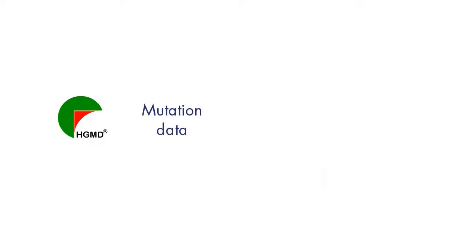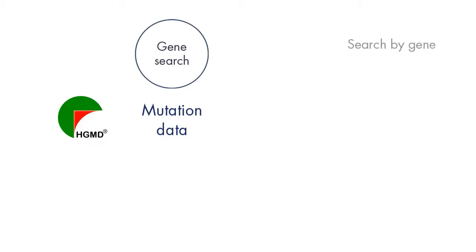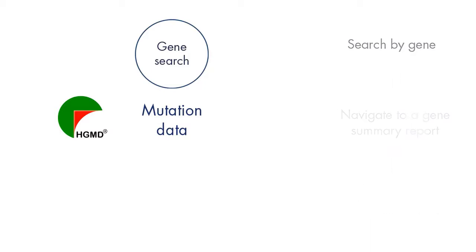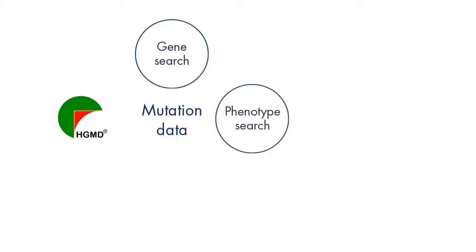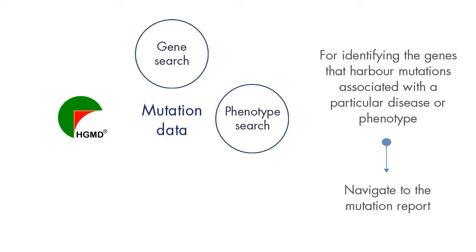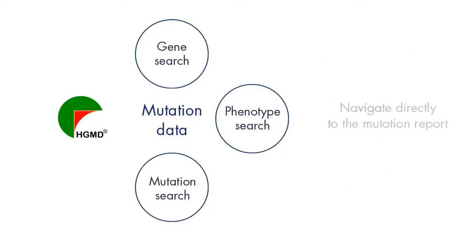The core of the HGMD database is the mutation data, which is easily accessed by three basic search approaches. The first is a gene-centric approach, where you search by gene, navigate to a gene summary report, and then navigate to the mutation report by clicking on the specific mutations listed for the gene. The second is phenotype-centric, which is helpful for identifying the genes that harbor mutations associated with a particular disease or phenotype, and ultimately their associated mutations. Using the third, mutation-centric approach, you can directly search for specific mutations.